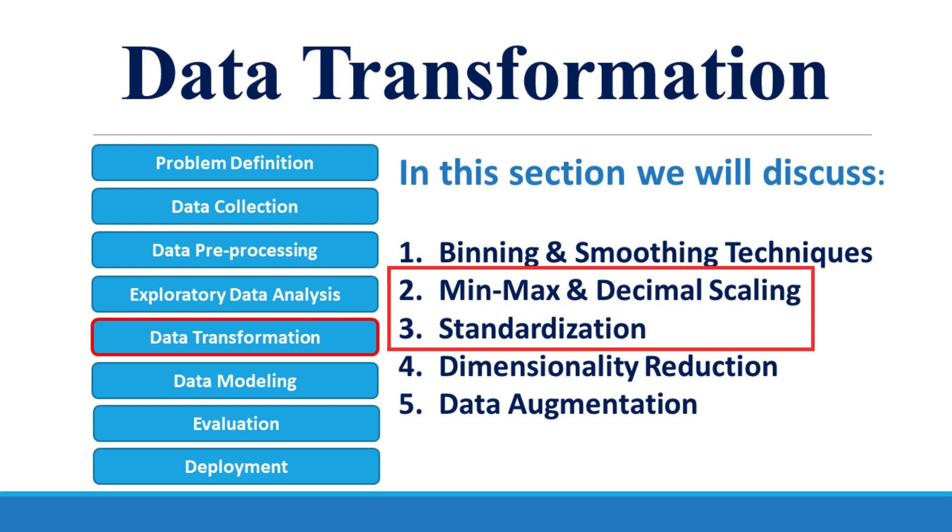In summary, both normalization and standardization are key techniques for data scaling. They help your machine learning models perform optimally by ensuring that your data is on the same scale. Remember to choose the method that aligns with your algorithm's assumptions and your data's characteristics.